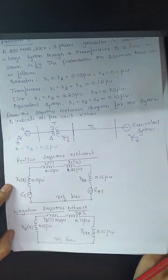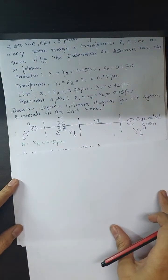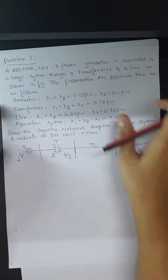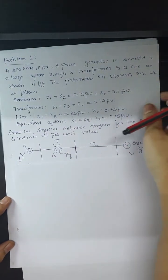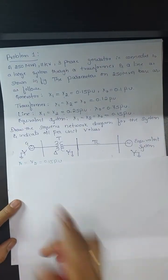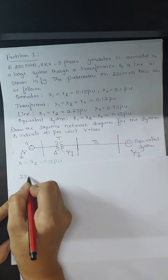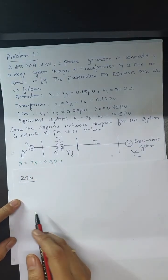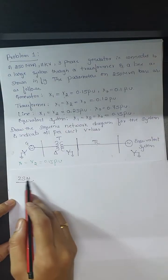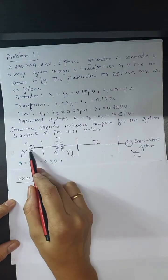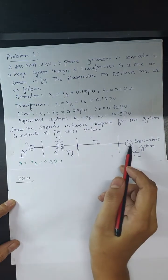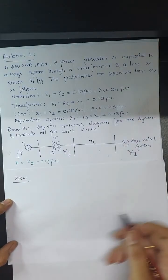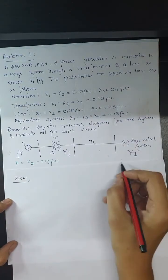Now drawing the zero sequence network, which is the most important part — it is entirely different when compared to the positive and negative sequence networks. To draw the zero sequence network, we must consider the method of connection of all the components: the transformer, generator, transmission line, and equivalent system.